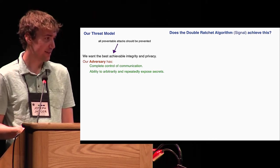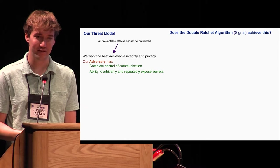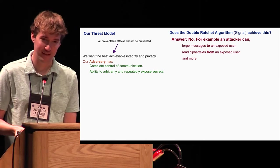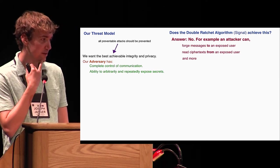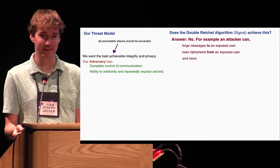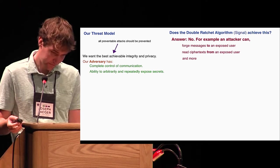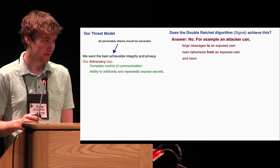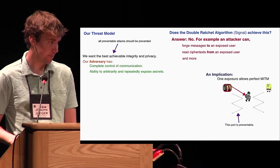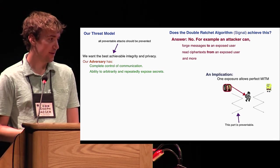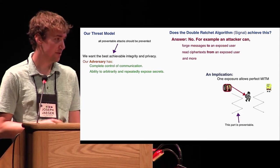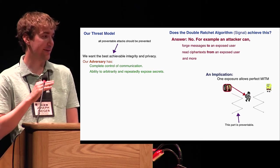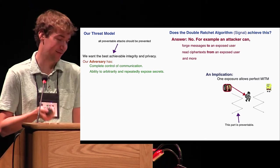An obvious question to ask then is does the double ratchet algorithm used by Signal achieve the strong notion that we came up with? Unfortunately not. Some examples of preventable attacks which would not be prevented by Signal include that given the state of one user you're able to forge messages to that same user. You're also given the state of a user capable of reading messages that that user sent to the other user, and some more subtle attacks.